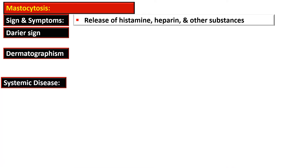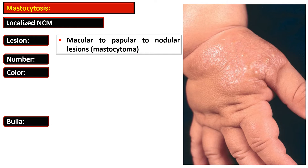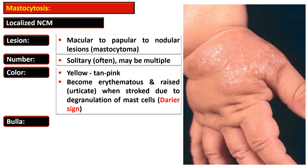There can be onset of pathologic fracture. Osteoporosis in young men or premenopausal women can be a diagnostic clue to mastocytosis. Localized or nodular cutaneous mastocytosis presents as macular to papular to nodular lesions, also named mastocytoma. This can be a solitary or multiple lesion. The color is yellow-tan to pink and it becomes erythematous and raised when stroked due to degranulation of the mast cell — this is the Darier sign.